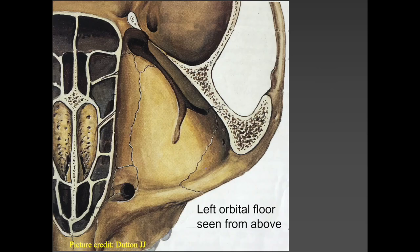Looking at the left orbital floor as seen from above, most of it is formed by the maxillary bone and the zygoma contributes a little inferolaterally. The lacrimal bone forms the posterior part of the lacrimal fossa and the floor continues medially as the ethmoids. In the floor, fractures as well as decompression surgery mostly happen medial to the infraorbital groove.